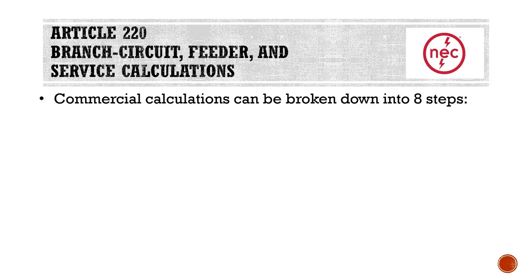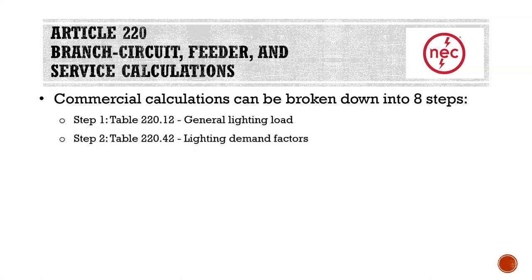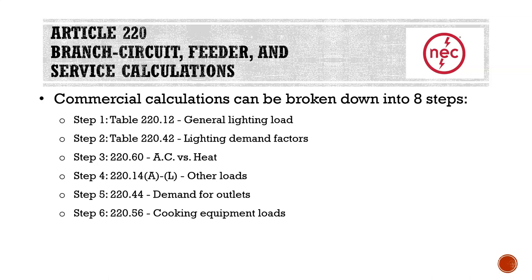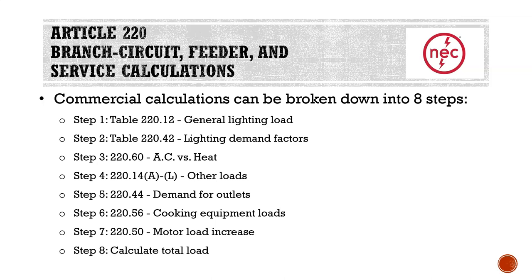Commercial calculations can be broken down into eight steps, as opposed to nine steps for our dwelling calculations. Step one is going to be the same as the dwelling calculation — Table 220.12 for our general lighting load. Then we're going to skip a step we'd normally do for a dwelling calculation and go straight to our lighting demand factors. Then we're going to compare our AC versus our heat again. We have a new step with 220.14 A through L for other loads, then 220.44 for receptacle demand, 220.56 for cooking equipment loads, 220.50 for motor load increase, and finally step eight: calculate total load.